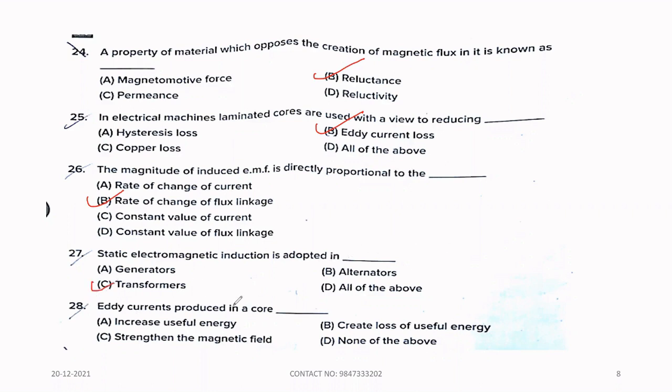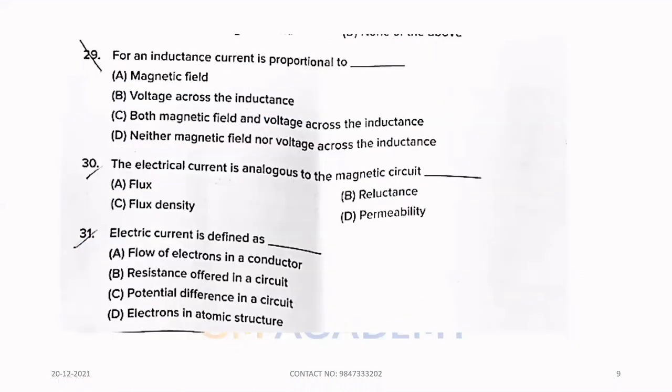Twenty-eight. Eddy current produced in a core, dash. Option B, Create loss of useful energy. Twenty-nine. For an inductance, current is proportional to dash. Option A, Magnetic field.